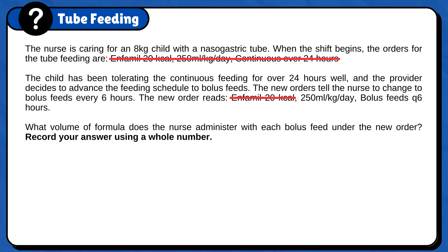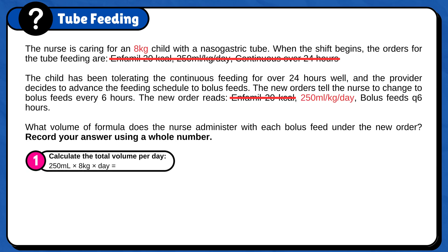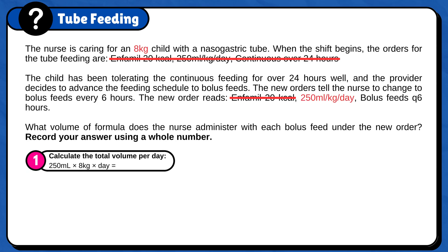First, calculate the total volume per day. 250 ml × 8 kg × 1 day = 2,000 ml per day.